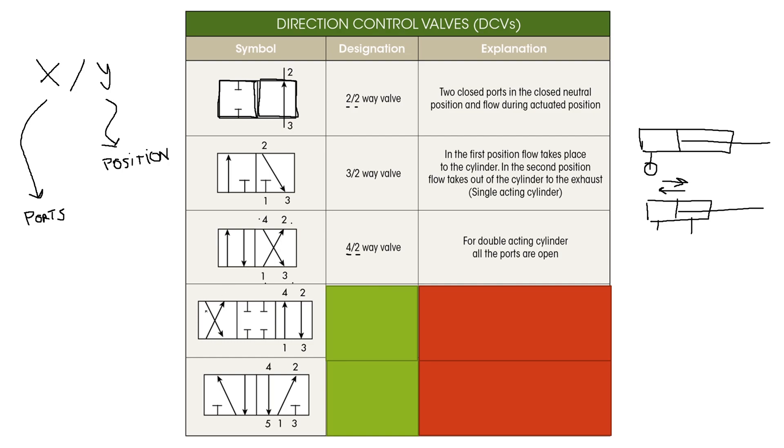Now we came to our fourth DCV. So here we can see it has three squares, which means it has three positions. So two open positions and one closed neutral position. This is our closed neutral position.